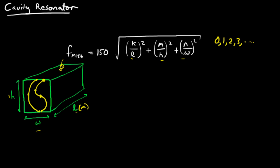For this expression, only one of the integers can be zero at a time. So for instance, k and m would be one, n would be zero—so one, one, zero. Or k could be zero, m could be one, n is one, and so on.